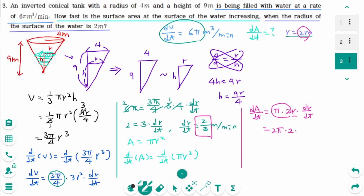Differentiating A equals πr² and substituting gives dA/dt equals 2πr times dr/dt equals 2π times 2 times 2/3, which equals 8π/3. The surface area at the surface of the water is increasing at a rate of 8π/3 meter squared per minute.